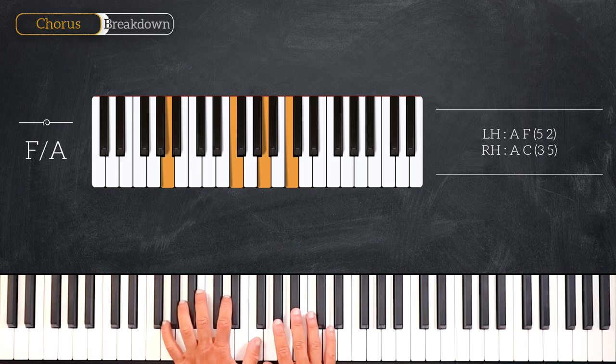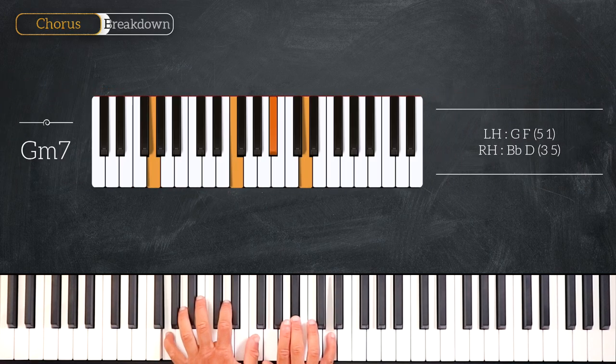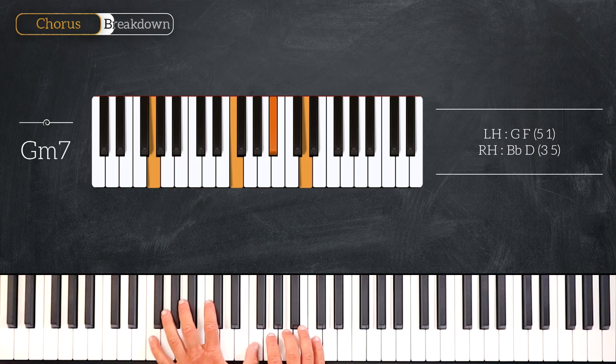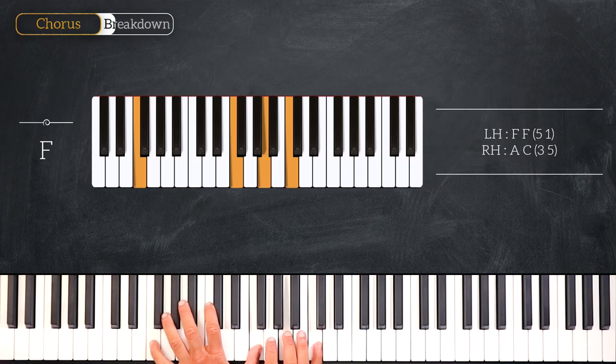Then we'll play this Gm7 chord, playing G F on the left and Bb D on the right. Right after we'll play this F chord. Octave F on the left, A C on the right.